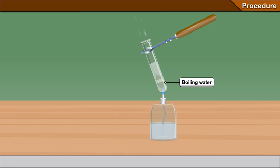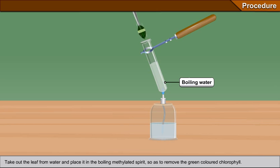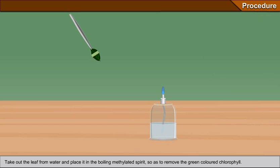Take out the leaf from water and place it in the boiling methylated spirit so as to remove the green colored chlorophyll.